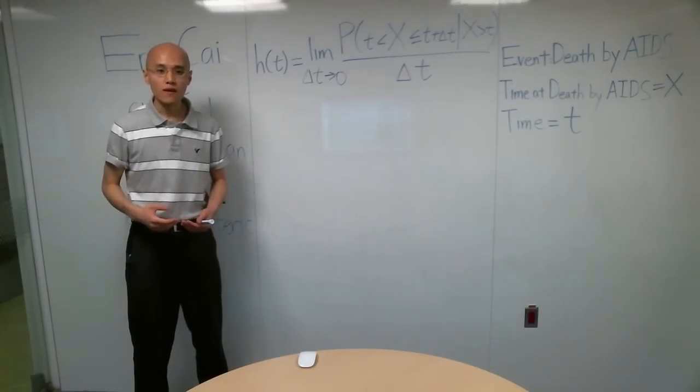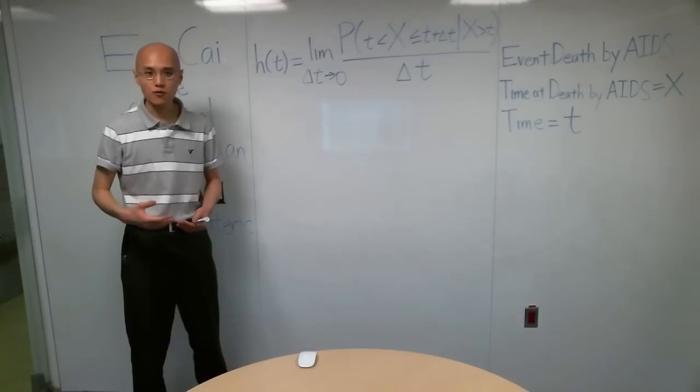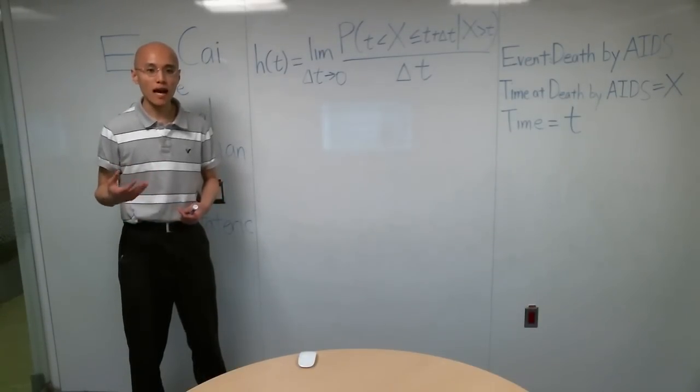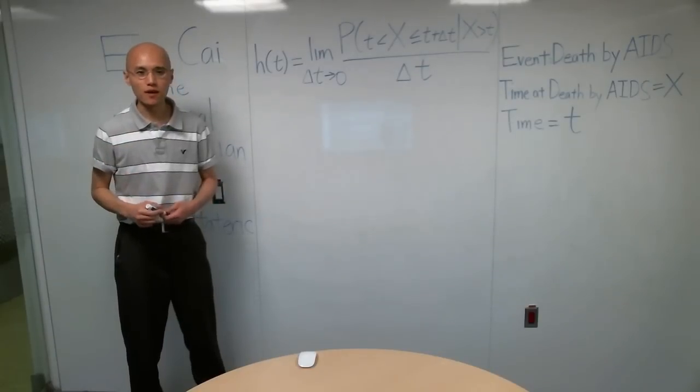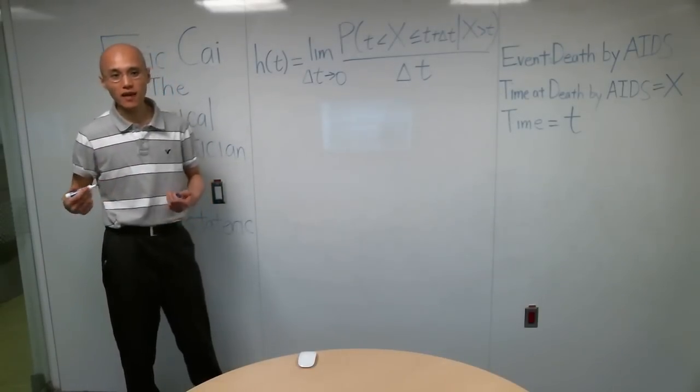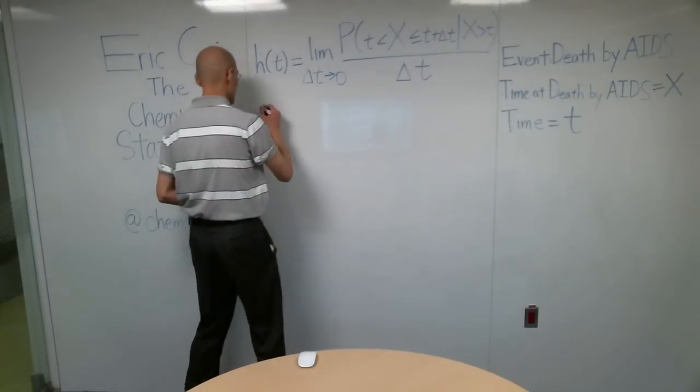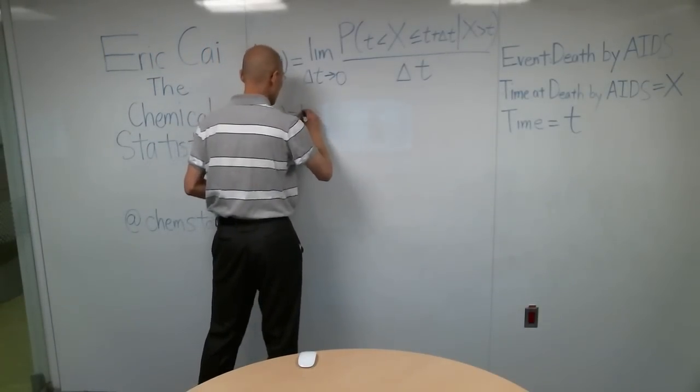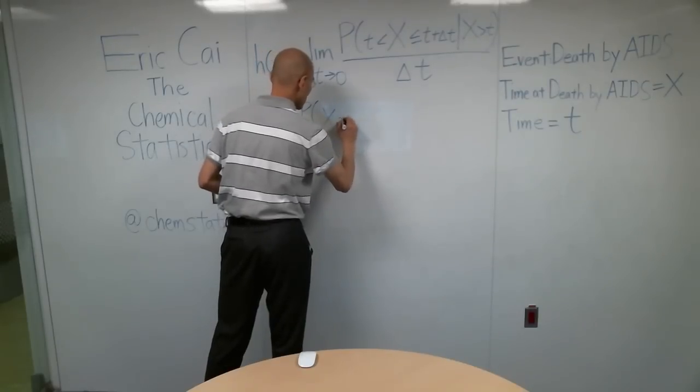First of all, on first instinct, when you're trying to define the probability of an event happening at a particular point in time, you may be tempted to define the hazard function as simply P of X equals T.